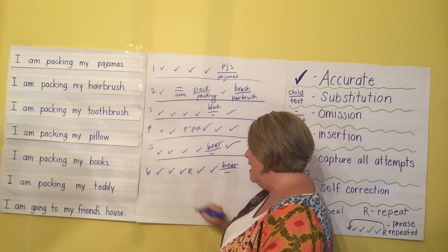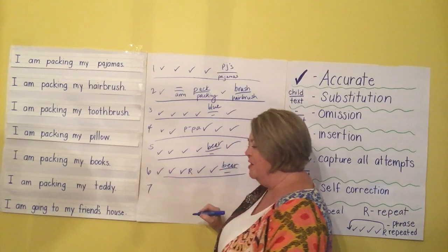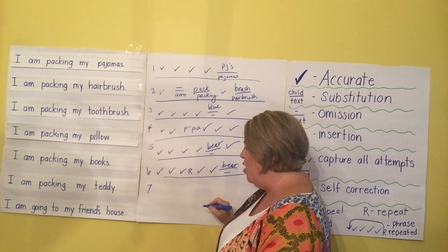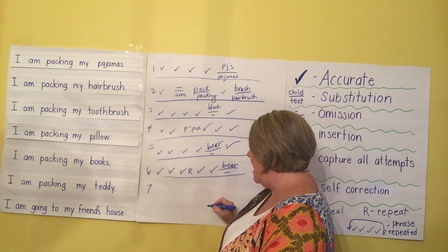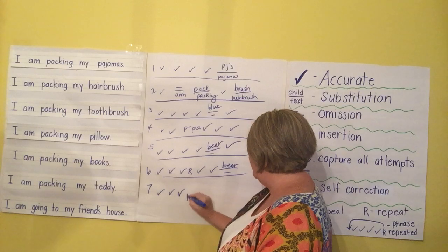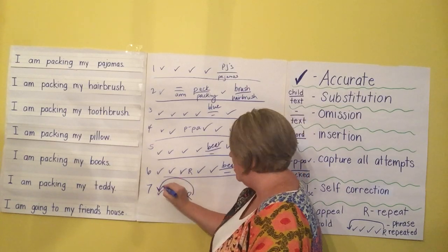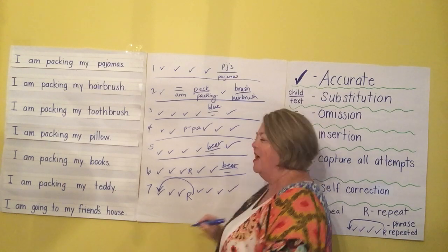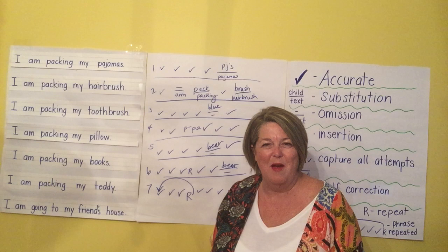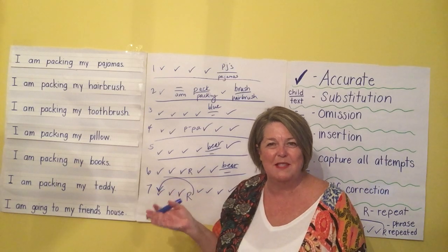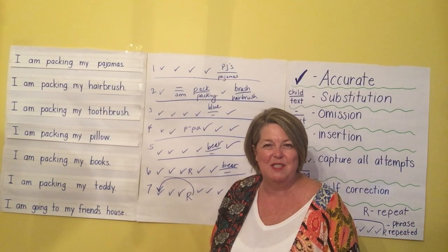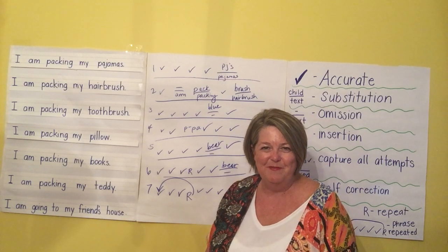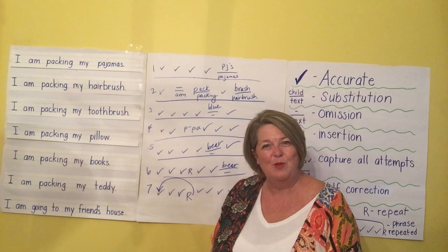On the last row, the child said: 'I am going, I am going to my friend's house' — they repeated the whole phrase 'I am going,' so you draw an arrow back to where they began repeating. That's just a little review of running records — I hope that was helpful. I'll pause in just a few seconds and then we're going to do a little review of how to score them. Hope you'll tune back in.